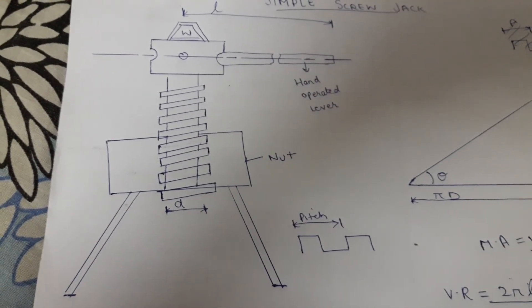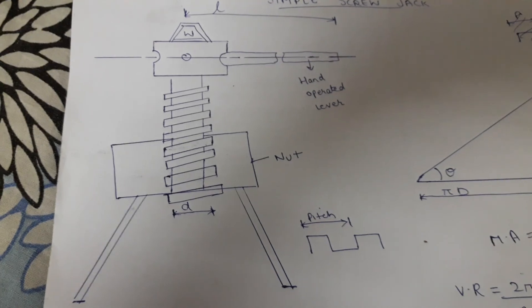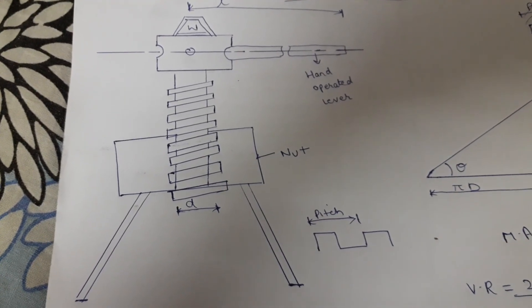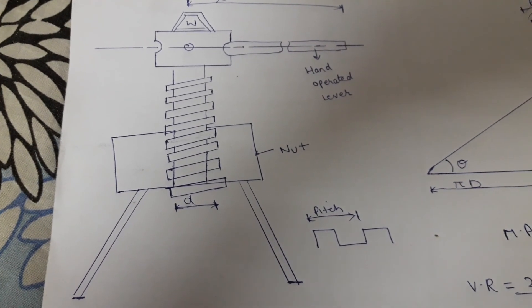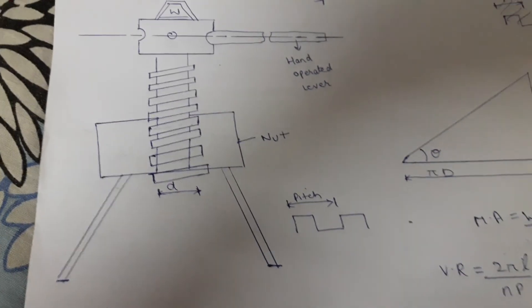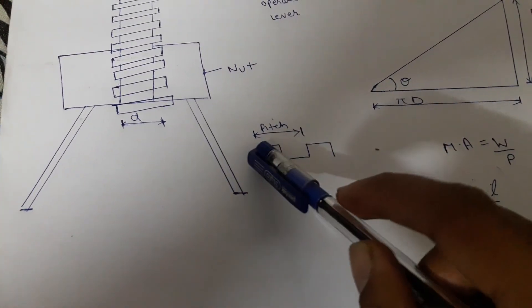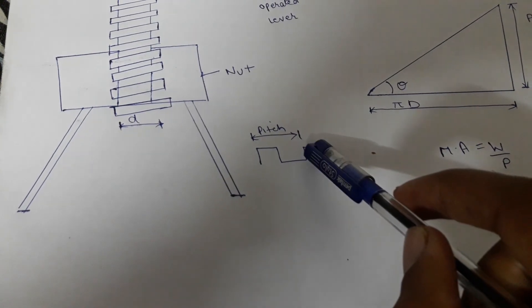Basically the distance moved by the load it all depends upon the square threaded screw. Basically it depends upon the pitch. Pitch may be defined as the distance between the corresponding points on two consecutive threads.